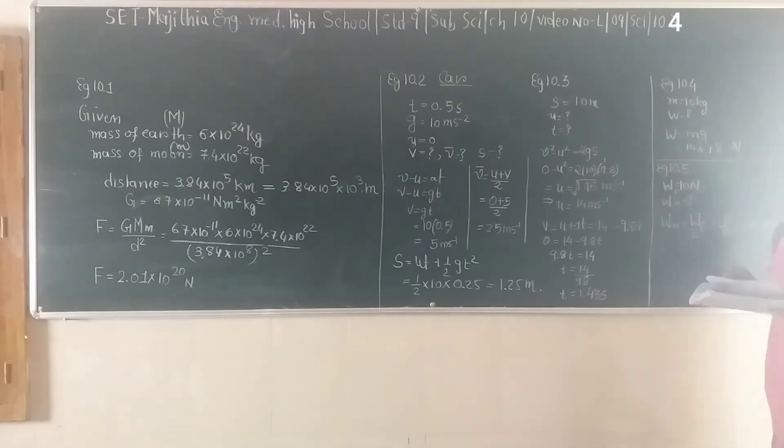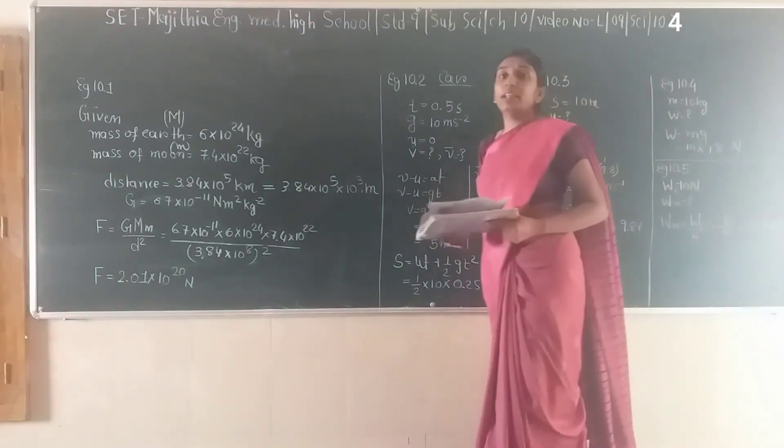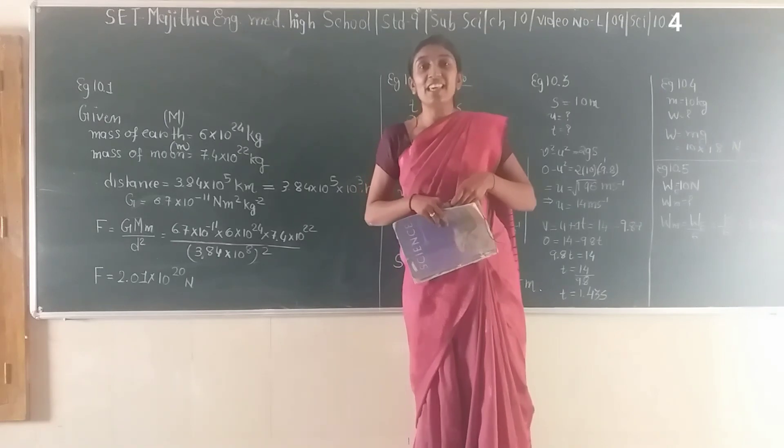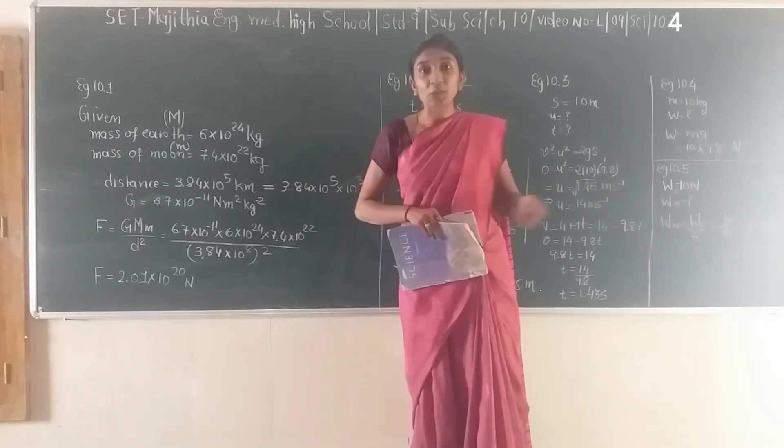Next is example 10.5. An object weighs 10 Newtons when measured on the surface of Earth. What would be its weight when measured on the surface of the Moon? You know that on the Moon, the weight becomes one-sixth of what it is on Earth. So we'll do 10 divided by 6, which is 1.67 Newtons. Remember, that doesn't mean you are fat; that means you are on the wrong planet! If you go to the Moon, your weight becomes one-sixth.